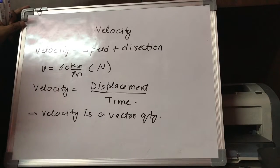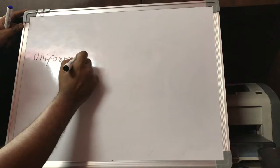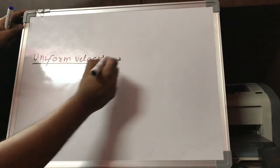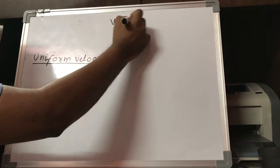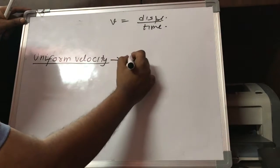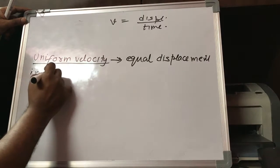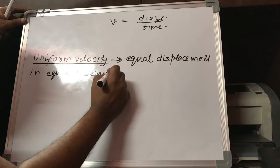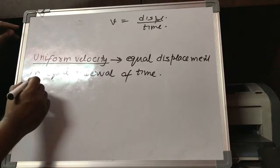Now we will study about different types of velocities. The first concept is uniform velocity — a very important concept. By definition, velocity is the ratio of displacement divided by the time interval. So if a body covers equal displacement in equal interval of time, then the body is said to have uniform velocity.